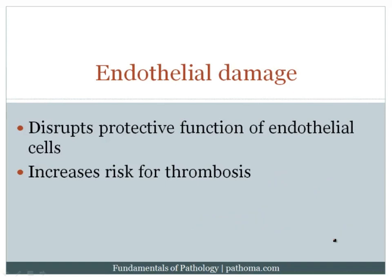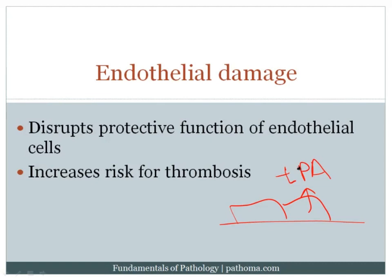Another molecule produced by the endothelium is TPA — tissue plasminogen activator. TPA converts plasminogen to plasmin, and plasmin has three functions: first, plasmin cleaves fibrin where a clot is present, or it can cleave serum fibrinogen to ensure a clot won't form; second, plasmin destroys coagulation factors; and third, plasmin can block platelet aggregation. All of these things are essential for protecting against the formation of clot.